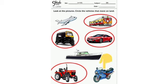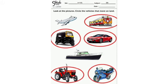Now which vehicle is this? This is a bike. And bike also moves on land. So we will circle it. I hope you all are clear about the concept of vehicles on land. See you next time with a new topic. Till then, take care and bye-bye.